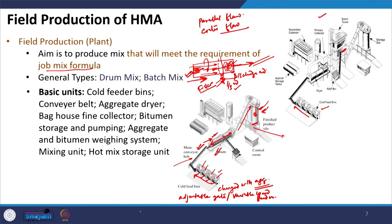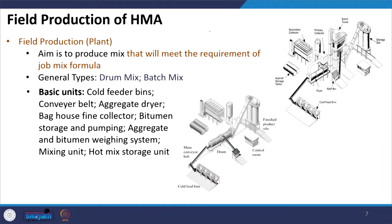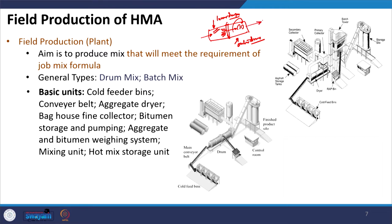In the counter flow drum, which is generally a double-barrel type, the drum is divided into two parts. The aggregate first enters against the exhaust gas — the aggregate enters from the opposite end to the burner. It is heated inside the inner drum and then travels to the outer drum, where it is mixed with the binder. Paddles inside facilitate the mixing of aggregates and binder. Similarly to the parallel flow, the mixture comes out from the discharge end and can be sent to the truck or to the storage silo.